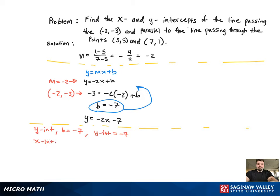Now we want the x-intercept. To do that, we're going to have to set y equal to 0. Now we're solving for x, so we have to add 7 to the other side and divide by negative 2. And that corresponds to the point negative 7 halves, 0.